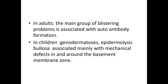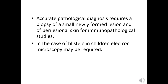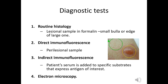To reach an accurate diagnosis through histopathological studies, we take a biopsy from the lesional and perilesional skin. In children we may also need electron microscopy. The diagnostic tools for bullous skin disorders include: first, routine histology from a lesional sample; then direct immunofluorescence test from the skin; and indirect immunofluorescence test, where we take the patient's serum to detect autoantibodies.